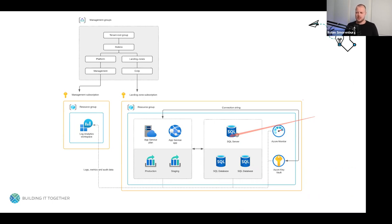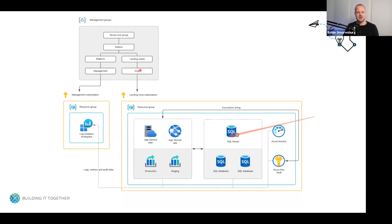The design recipe is based on the enterprise-scale landing zone architecture framework. We have the tenant root group, followed by the name of the organization. I created a platform management group, and under the platform I created a management group. On the right, there's a landing zones management group with a corporation management group underneath. Both management groups contain a subscription — in this case, a management subscription and a landing zone subscription.